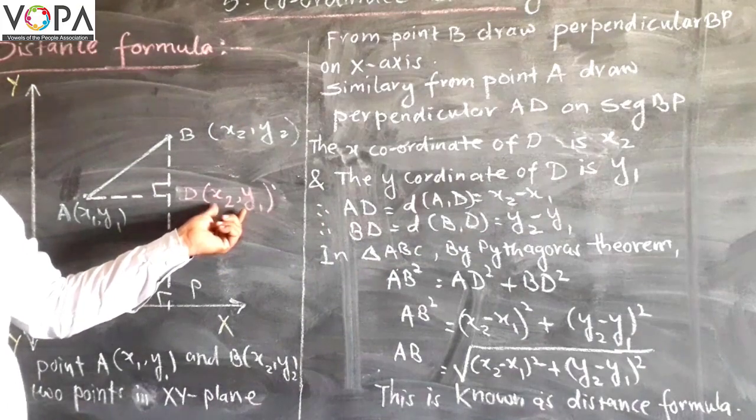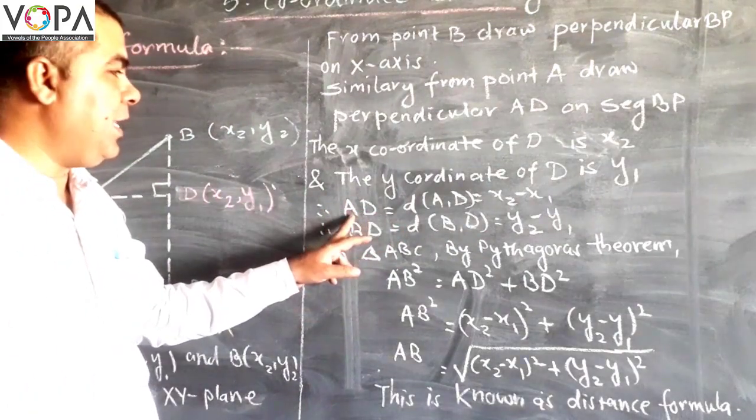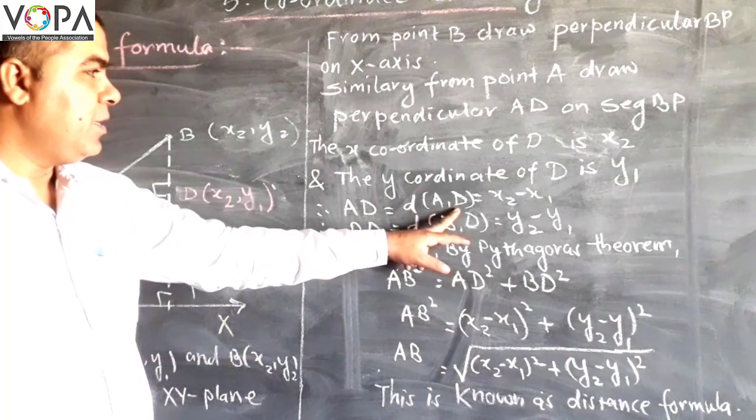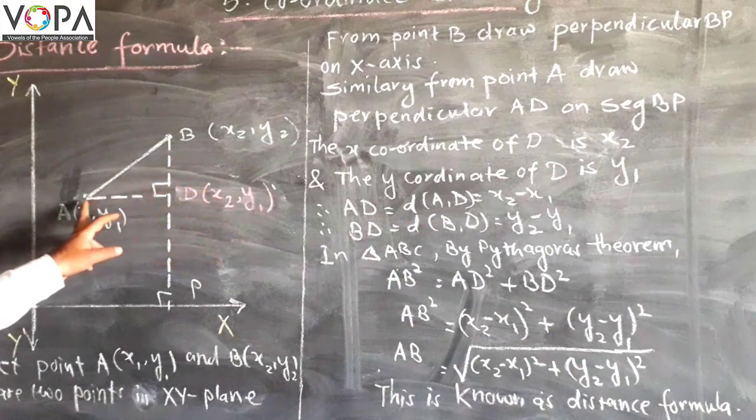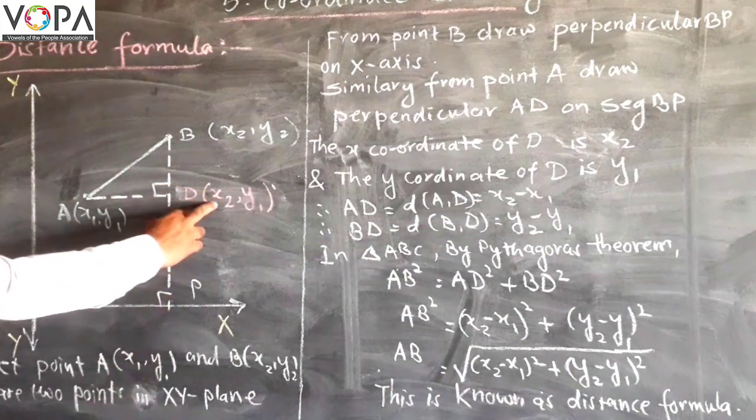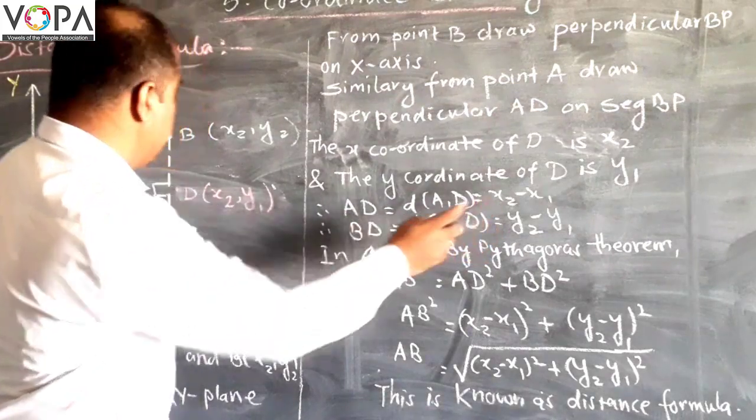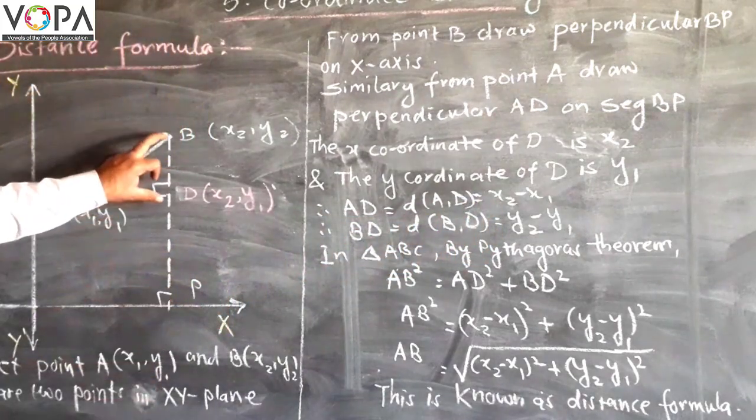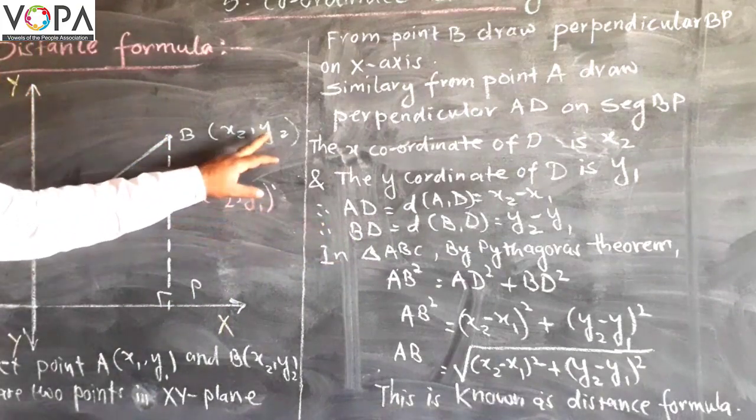Here we have shown in the figure distance AD, that will be AD equals x2 minus x1 by using distance from standard time. Similarly the distance BD will be y2 minus y1.